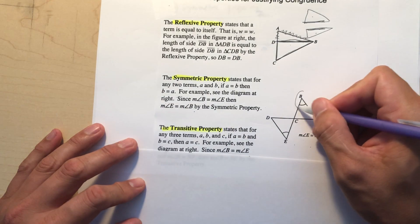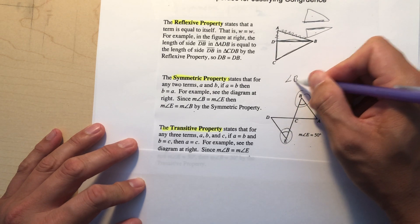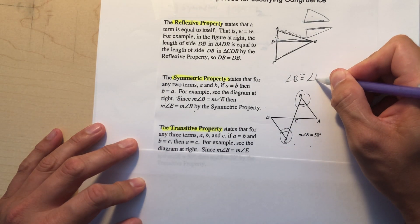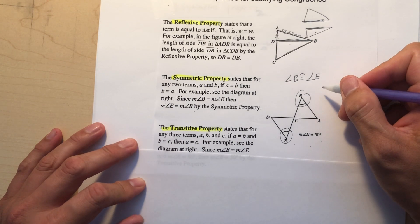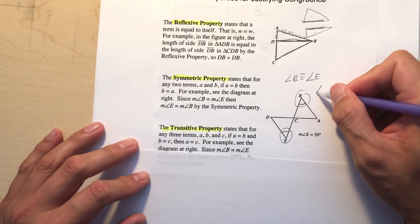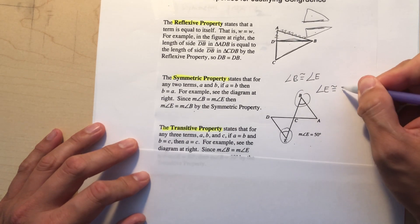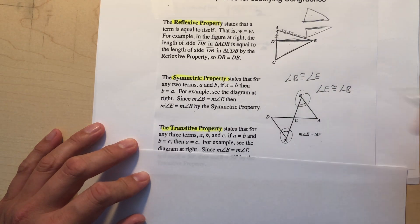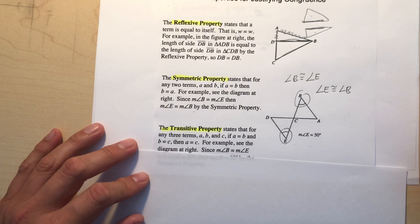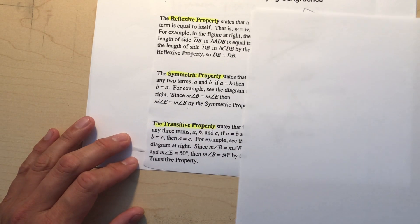The Symmetric Property is even simpler: if angle B is congruent to angle E, then angle E is also congruent to angle B. It works both ways — pretty obvious, but that's what it is.